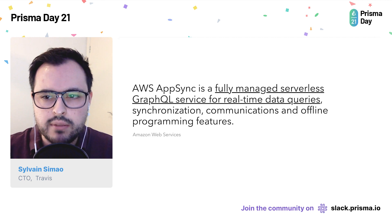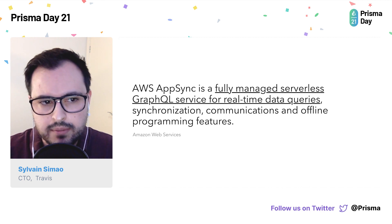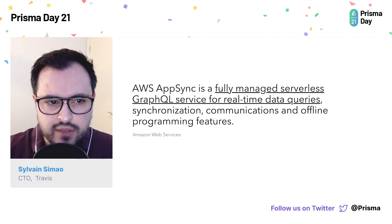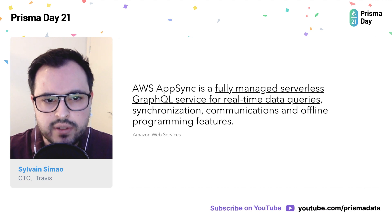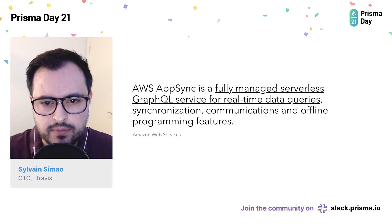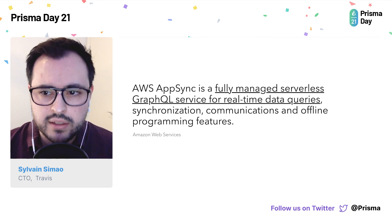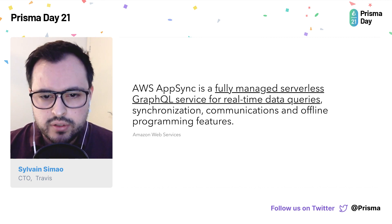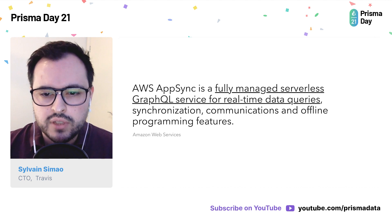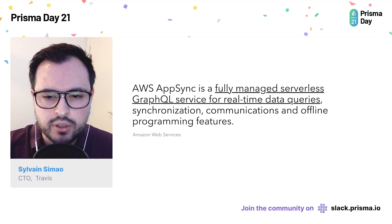So what is AWS AppSync exactly? Starting with a description from the AWS website: AWS AppSync is a fully managed serverless GraphQL service for real-time data queries, synchronization, communications, and offline programming features. The most important thing to retain is that AWS AppSync is essentially GraphQL as a service.